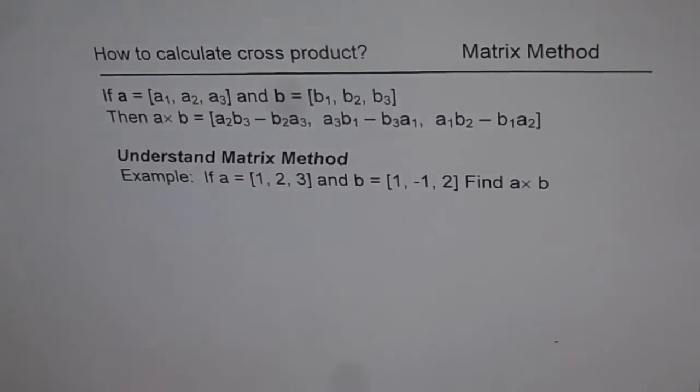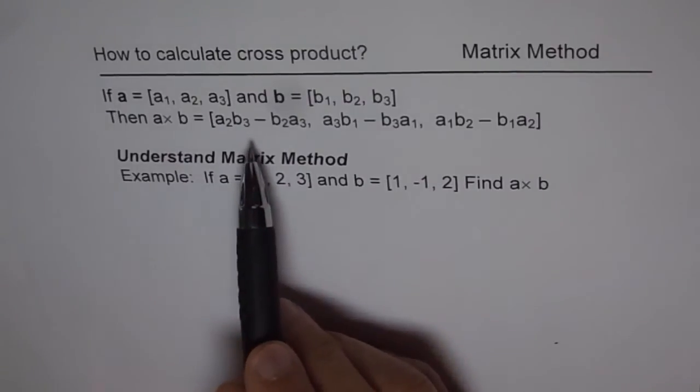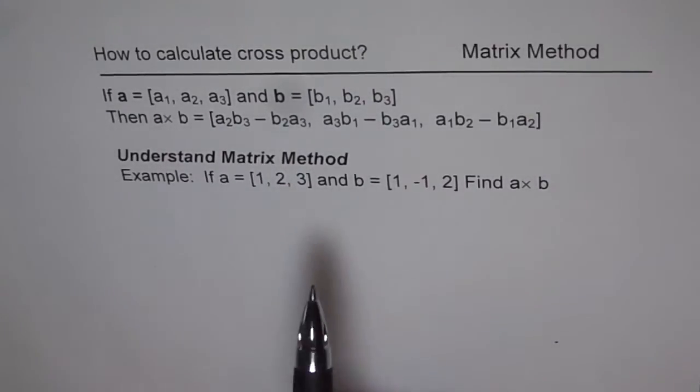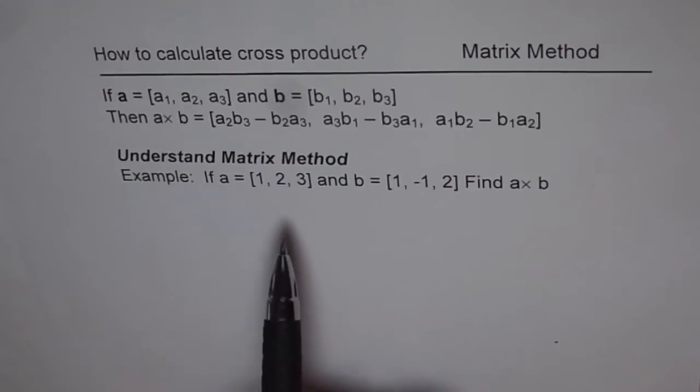Now we learned how to find that in one of our videos, which was we need to write the components of A in a row, starting with the second component and repeating it at the end. Then same thing with B, and we saw how to remember this cross product. Now I'll show you the matrix method.